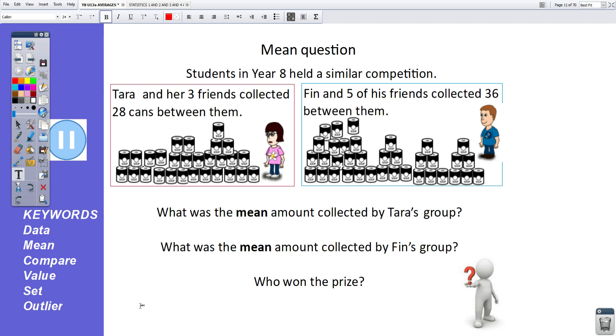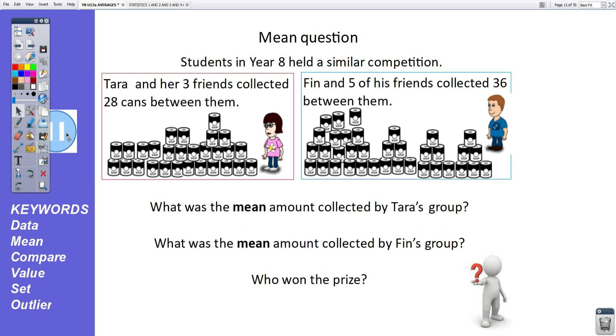So if we are comparing the mean for both of these groups, Lucy's group, with a mean of five, had a higher mean than Harry's group, with a mean of four. So here is a mean question for you to have a go at. Students in year eight held a similar competition. I will let you read the question and answer the questions underneath. Pause the video, have a go at working out the answers and unpause the video when you are ready to mark. Okay, let's have a look. So what was the mean amount collected by Tara's group? They collected 28 cans. Tara and her three friends, there were four of them. 28 divided by four equals seven. The mean was seven. With Finn's group, Finn and five of his friends, so there are six people, 36 cans, the mean 36 divided by six equals six. Tara's group had the greater mean, so who won the prize? Tara's group.